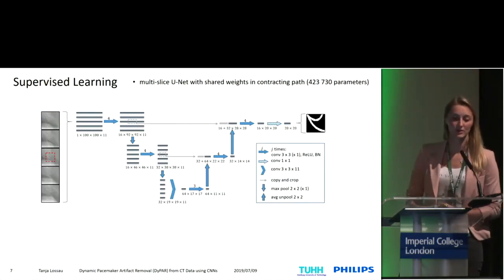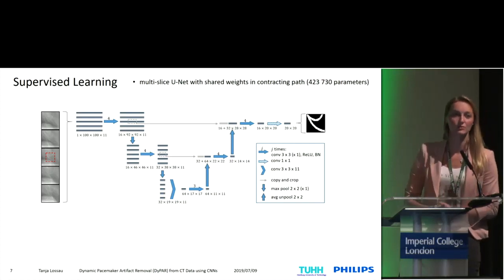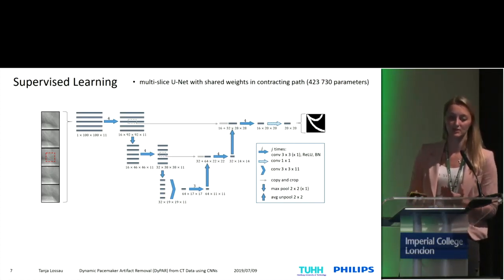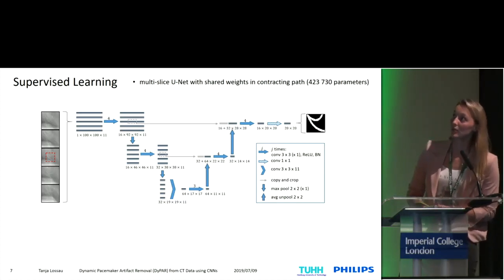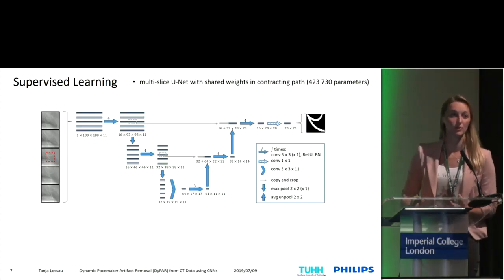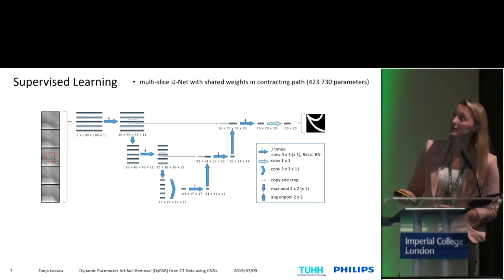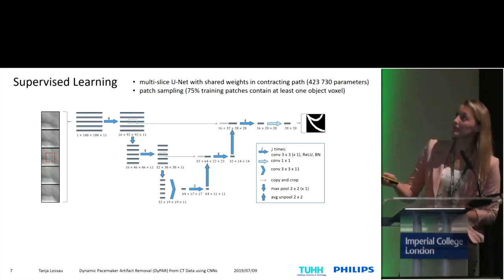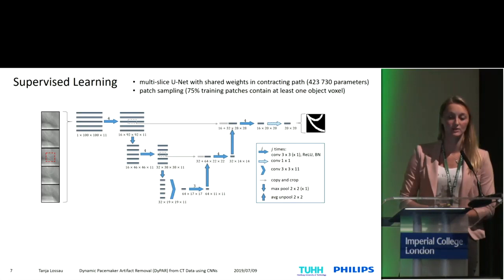Now we have our data and can perform supervised learning. In the first step, we sample multiple patches along the projection views and use them as input. We adopted the existing U-Net architecture for these multi-slice inputs. As we always search for the same line-shaped structures, the weights in the contracting path are shared. The information are then joined in the bottleneck so that we also exploit the temporal and angular information. In the expanding path, only the center slice, which should be segmented, is copied and cropped. We perform patch-based training because the data is highly imbalanced, and we enforce that 75% of the training patches contain at least one object voxel. We also use the focal loss, which is well-suited for imbalanced problems.